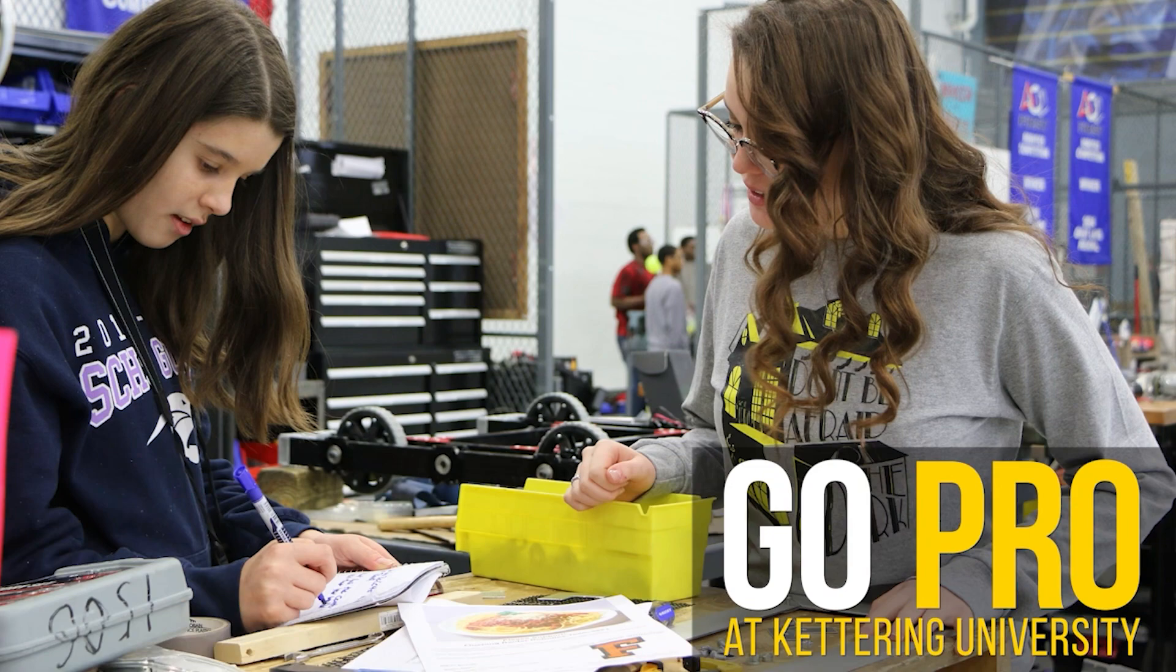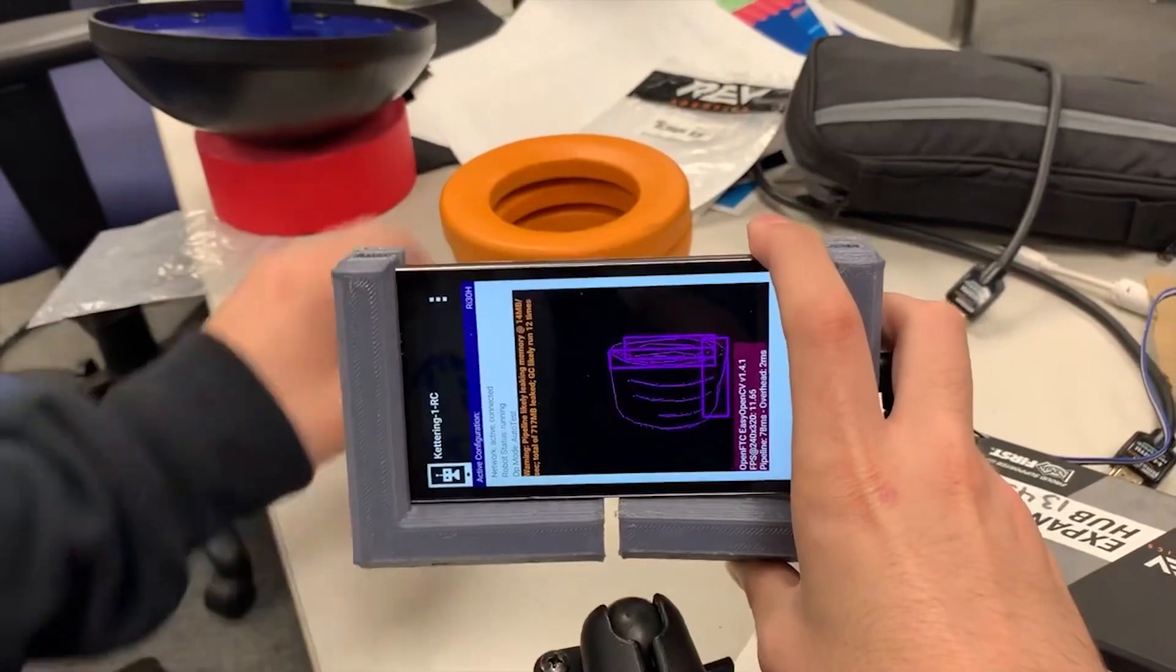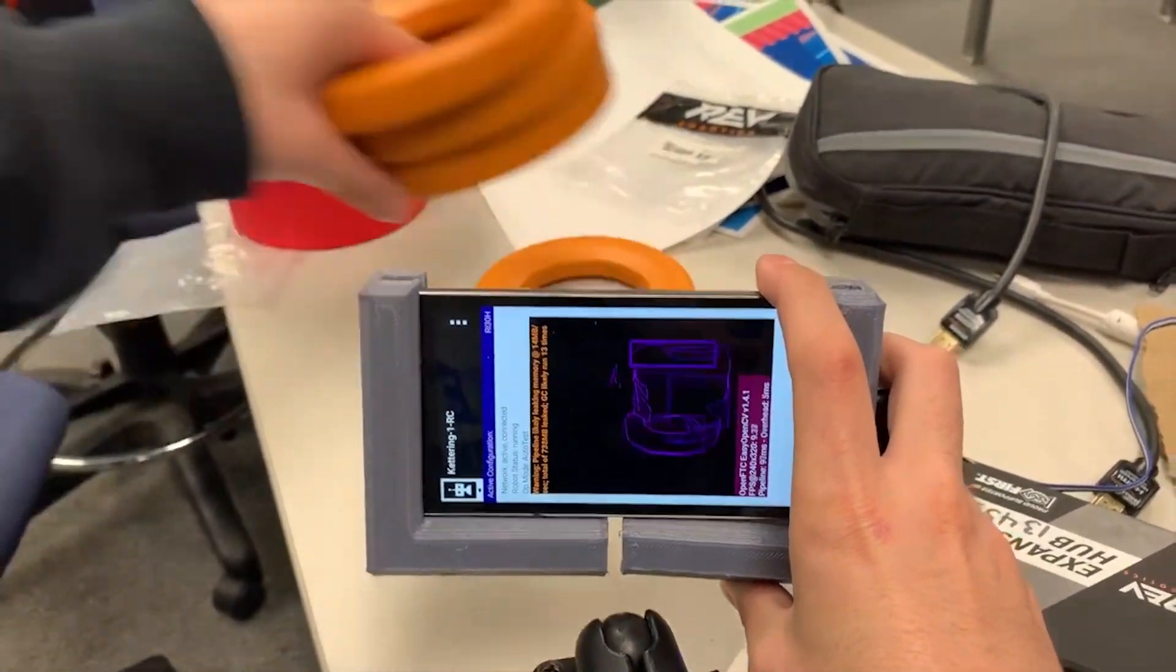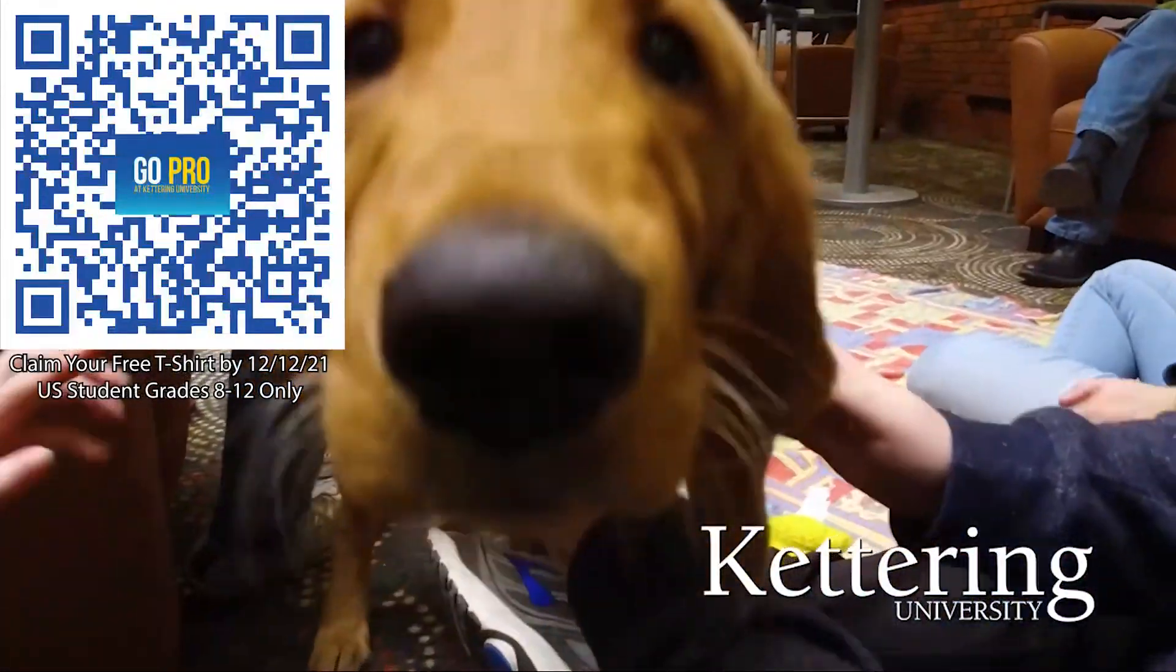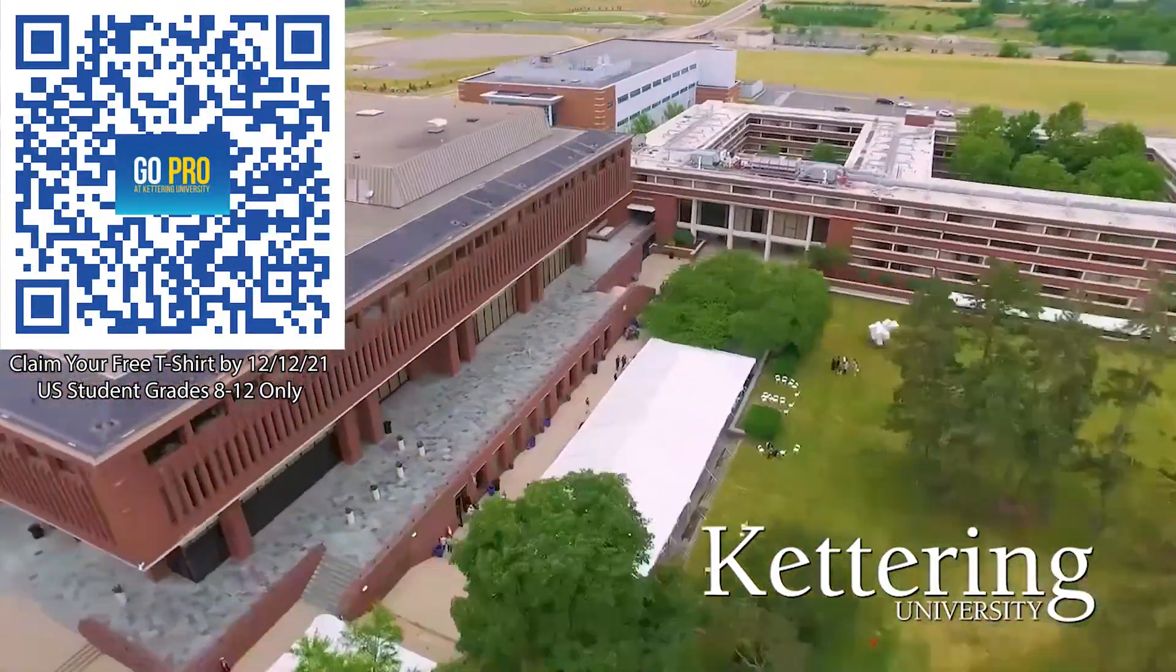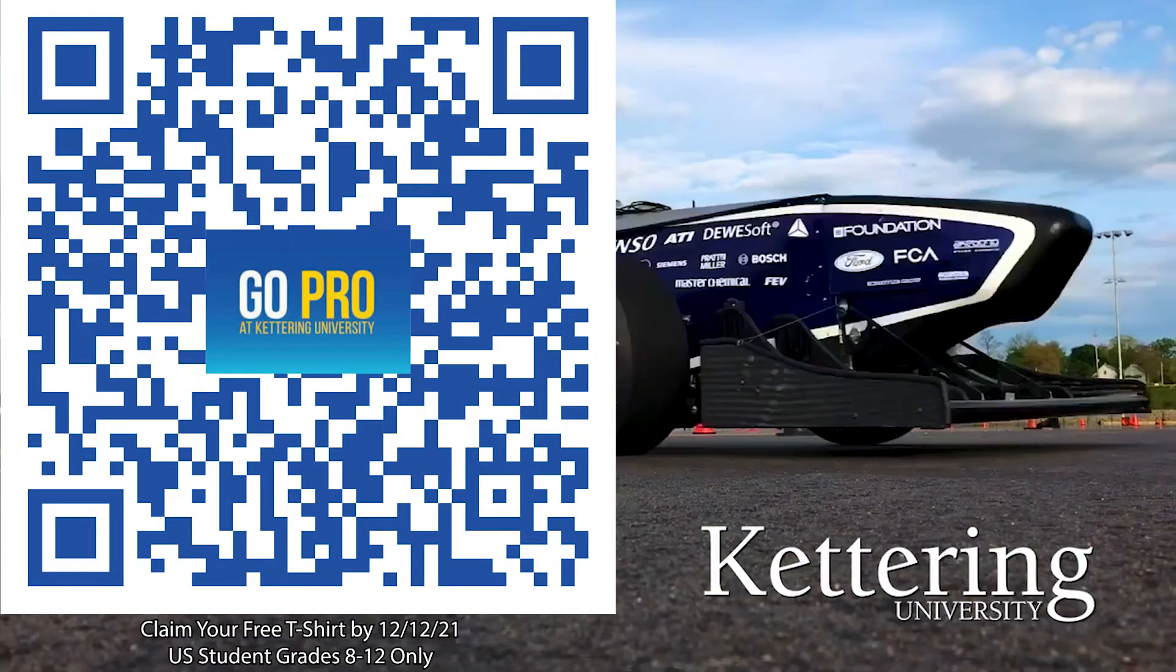Thanks to Kettering University for their support of this video. Kettering University is the leader in new programs of expertise including artificial intelligence, cyber security, and automotive engineering design. If you are a U.S. student grades 8-12, scan the QR code to stay up to date on info and events happening at Kettering and get a free Kettering t-shirt when you sign up by December 12, 2021.